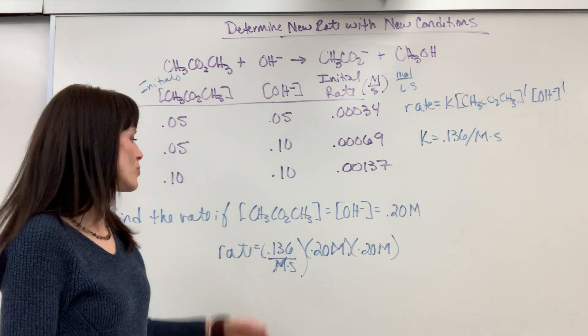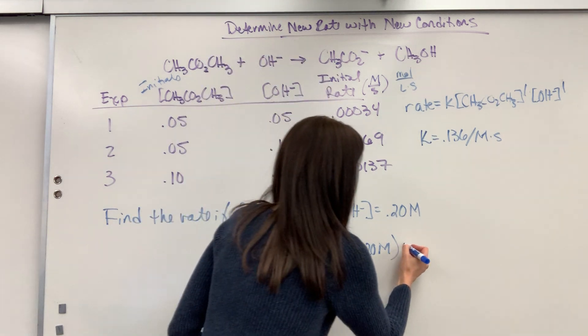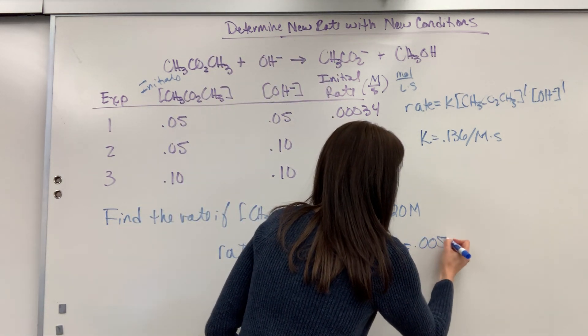So now we just multiply everything. 0.136 times 0.2 times 0.2. And we are going to get 0.00544.